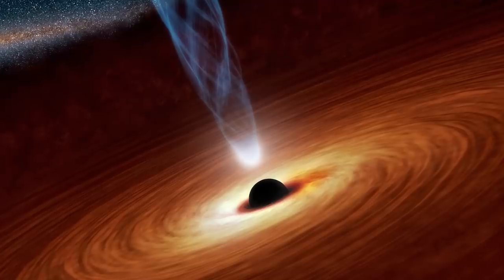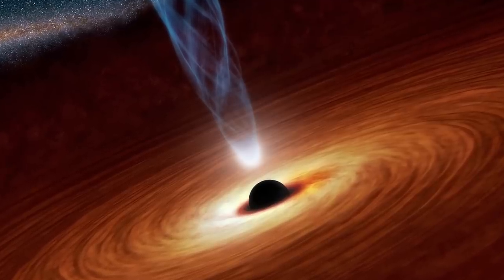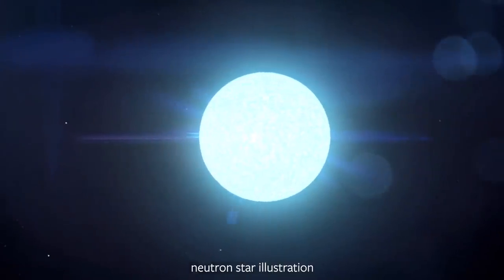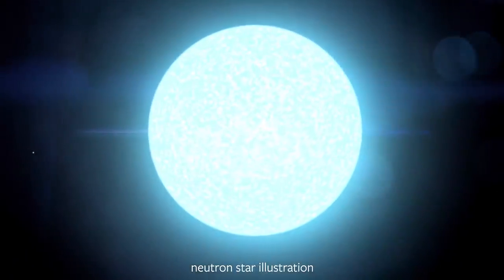Although the researchers aren't yet sure whether they've found a black hole or a less massive neutron star, this is the first time either one has been found through microlensing.